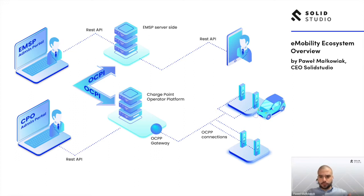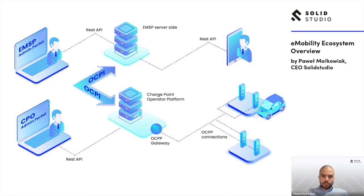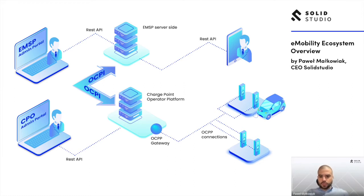The EV driver can start charging by pressing a button. There are two basic ways: remote start/stop and RFID. For remote start/stop, pressing the button on the mobile application calls the EMSP server side over a REST API. This server knows which CPO pushed the data for the given charging station, and over the OCPI connectivity it calls the charging platform to start the charging.